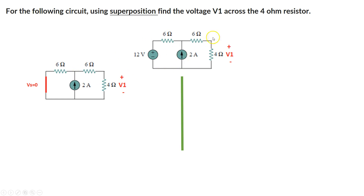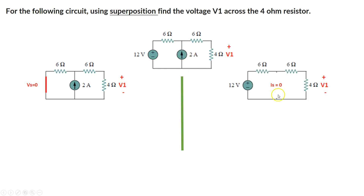Now, looking at the circuit again, I want to find the influence of the voltage source without the current source. Removing the current source means replacing it with an open circuit. In this case, the voltage source is in series with three resistors, so we can use the voltage divider. For the first circuit we'll use the current divider, and for this one we'll use the voltage divider.